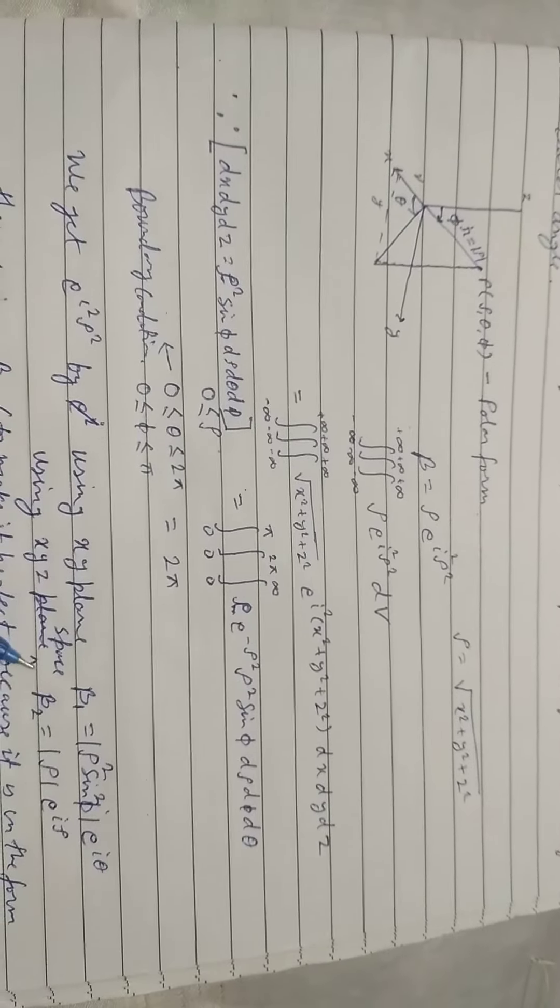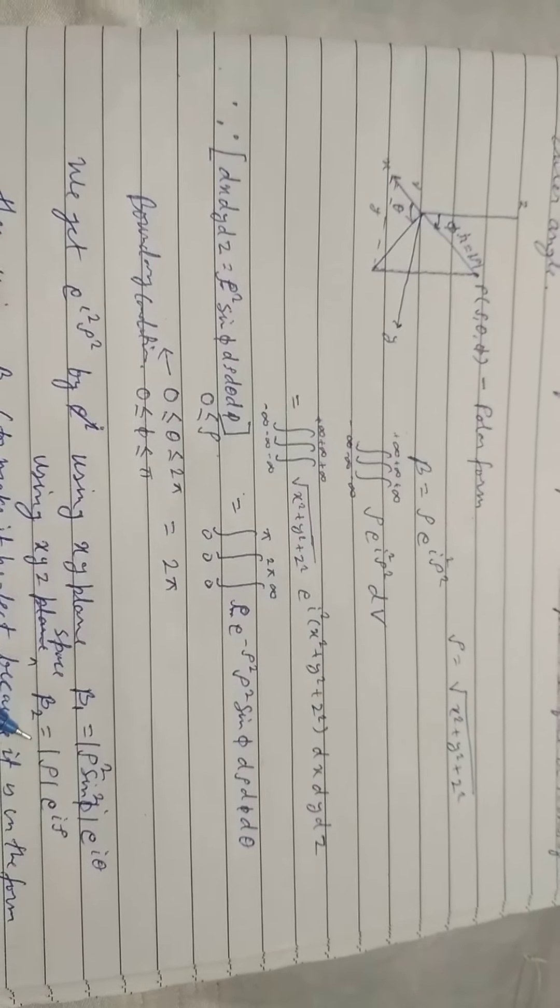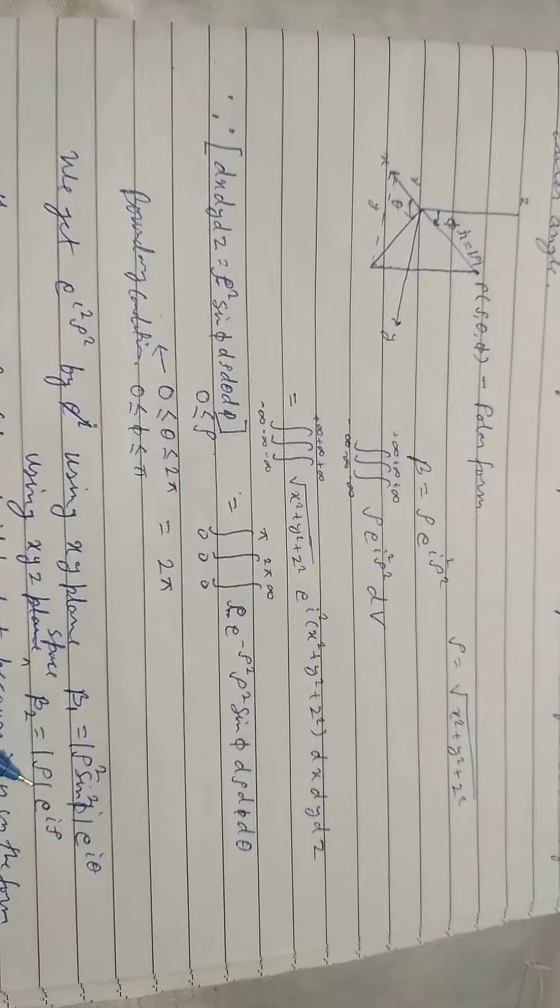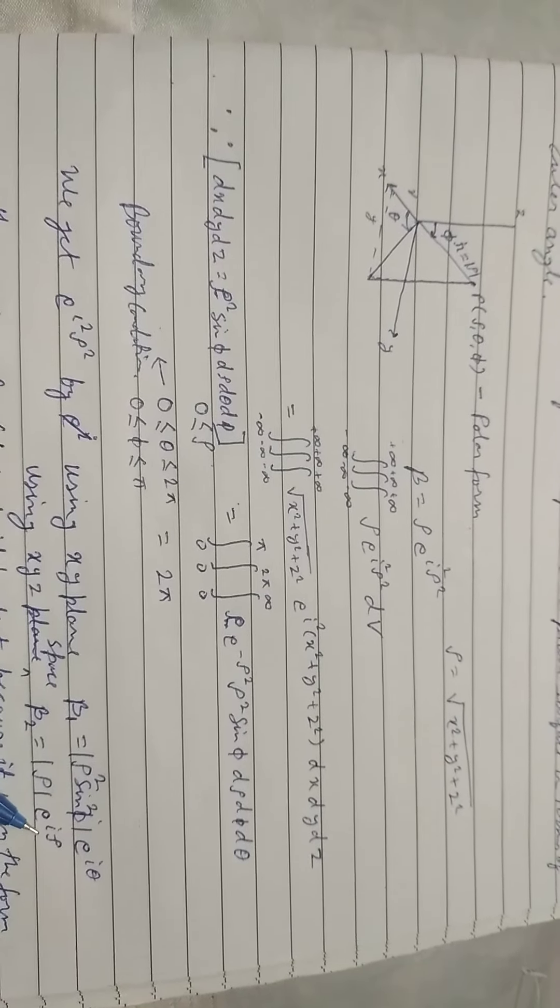Using x, y, z space, we get beta 2 is equal to rho mod of rho e to the i rho.